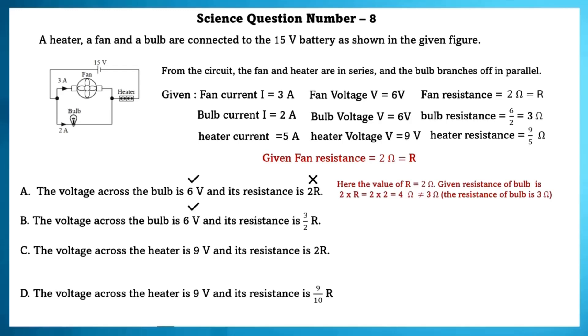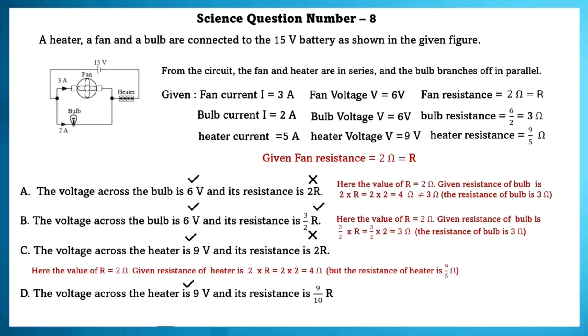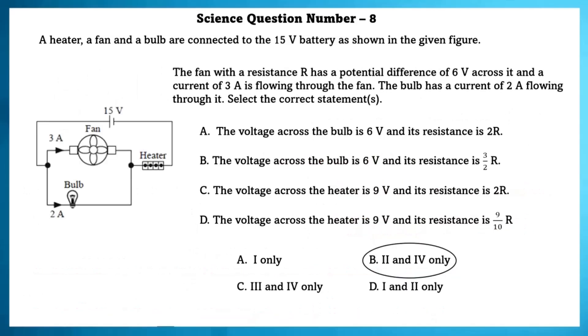The voltage across the bulb is 6V. Yes, this is true. And its resistance is 3 by 2R. Here, the value of R is equal to 2. Given resistance of the bulb is 3 by 2 into R, which is equal to 3 Ohms. So, it is correct. The voltage across the heater is 9V. Yes, it is true. And its resistance is 2R. Given resistance of heater is equal to 2 into R, which is equal to 4 Ohm. But the resistance of heater is 9 by 5 Ohms. So, this is wrong. The voltage across the heater is 9 voltage. Yes, this is true. And its resistance is 9 by 10 R. Given resistance of heater is 9 by 10 into R, which is equal to 9 by 5 Ohms. The resistance of heater is 9 by 5 Ohms. So, this is true. Second option and fourth option are true.